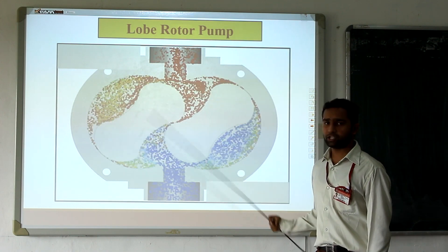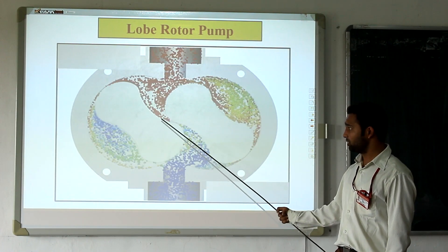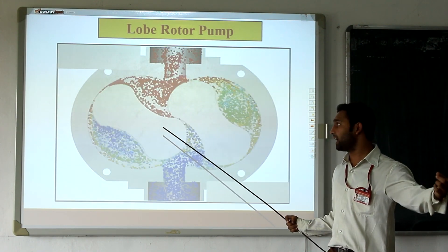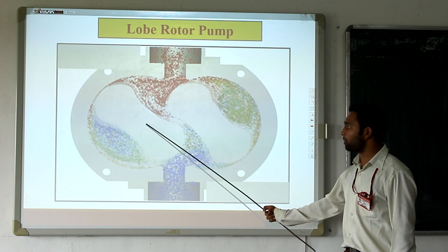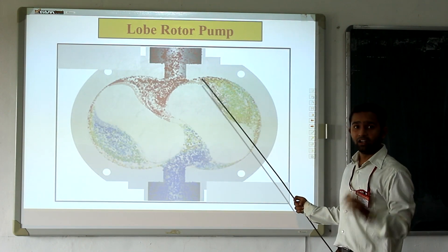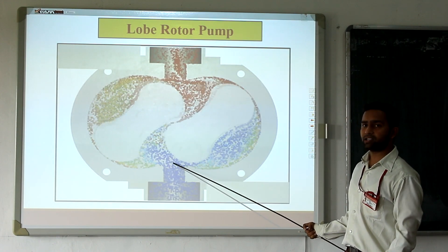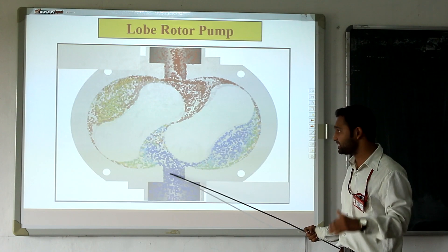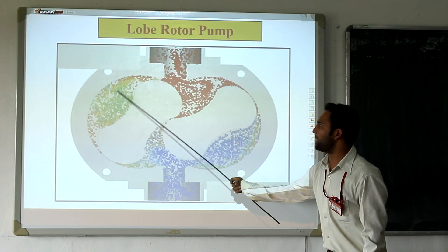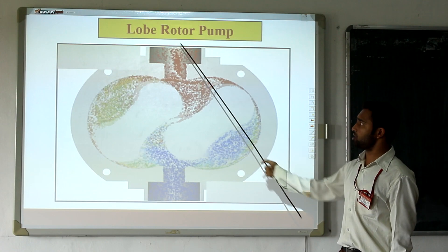Now the lobe pump. The construction of the lobe pump indicates that two lobes are connected with each other but there is clearance at the point. The lobes are mounted inside the casing, and they are driven by external gears mounted outside the casing. In case of the lobe pump, from the downside, suction is possible because area increases, volume increases, pressure decreases, and partial vacuum is created, so suction is possible. Similarly, from the other side, discharge is possible. This is the construction of the lobe pump.